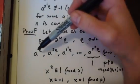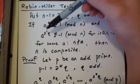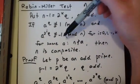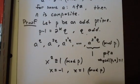And so therefore, if one of these numbers is not 1, one of them has to be negative 1, and therefore a to the 2iq is congruent to negative 1 for some i in this range. So by the contrapositive, this completes the proof.